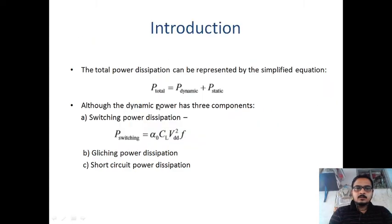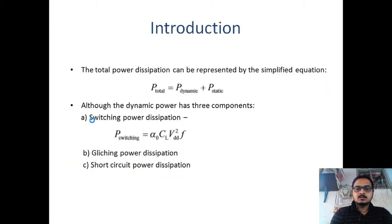Dynamic power dissipation has three components, as we have already seen in previous videos. The first one is switching power dissipation — when the load capacitor is charging and discharging, power dissipation occurs. The formula is P_switch = α₀ · CL · VDD² · f, where α₀ is switching activity, CL is load capacitance, VDD is supply voltage, and f is clock frequency. This is almost 80 to 90 percent of the power dissipation.